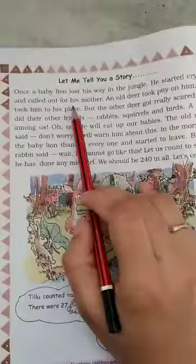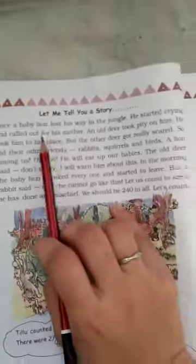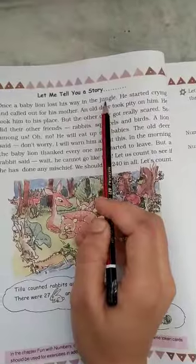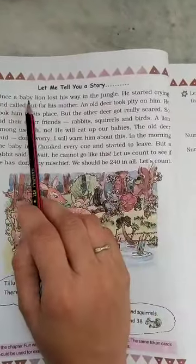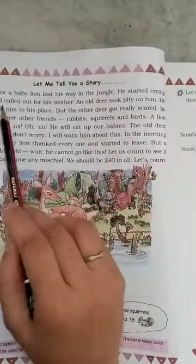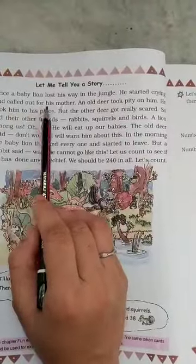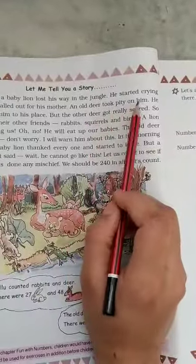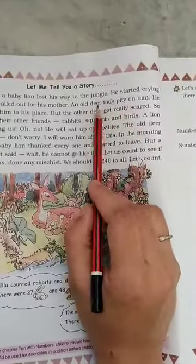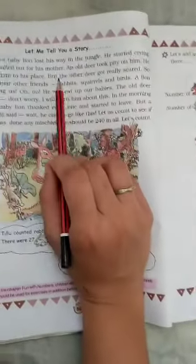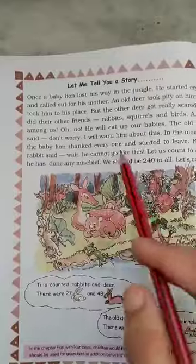This is a story. Let me tell you a story. Once a baby lion lost his way in the jungle, he started crying and called out for his mother. An old deer took pity on him and took him to his place, to his home.